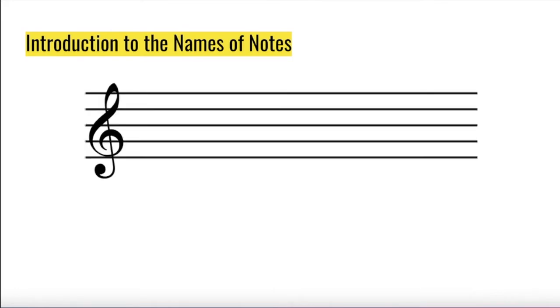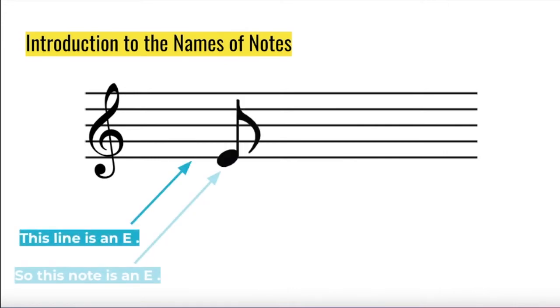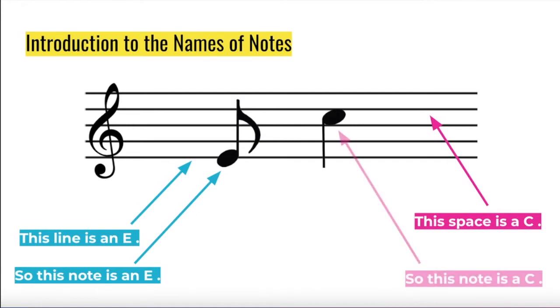To learn the names of the notes, you must know the names of the lines and spaces for each clef. Any note on a line has the name of that line. This line is an E, so this note is an E. Any note in a space has the name of that space. This space is a C, so this note is a C.